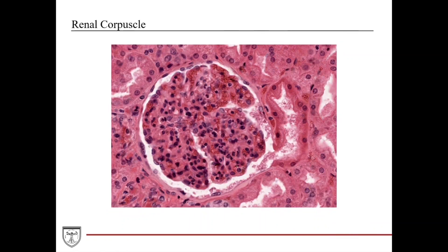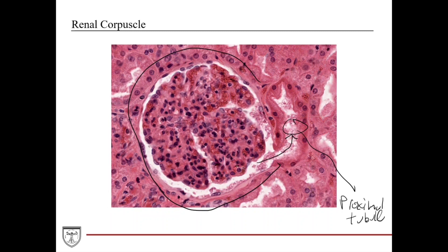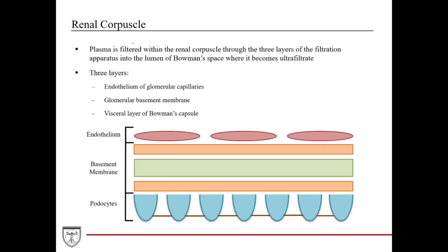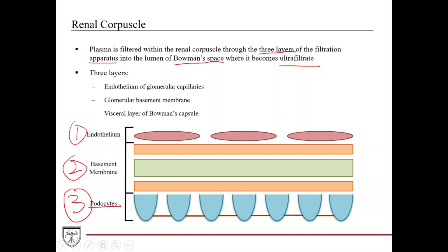Here's another great section showing the entire renal corpuscle: glomerular capillaries with mesangial cells, Bowman's space, the parietal layer, and then you can see where it's continuous with the proximal tubule — a nice view showing Bowman's space is directly continuous with it. From a functional standpoint, plasma is filtered through the renal corpuscle across three layers of the filtration apparatus: the endothelium of the glomerular capillaries, the glomerular basement membrane, and the visceral layer of Bowman's capsule — the podocytes.